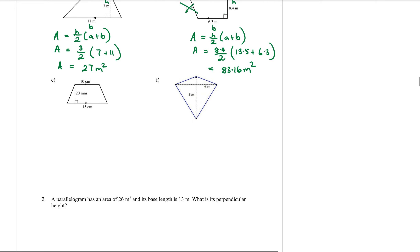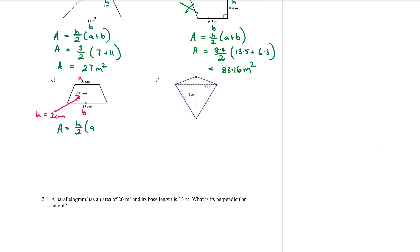Part e is again a trapezium — you can see the parallel lines. So a is 10 and b is 15. The 20 is the h, but be careful because that one is in millimetres, so I'm going to change it to centimetres like the others. 20 millimetres divided by 10 is the same as 2 centimetres for the height.